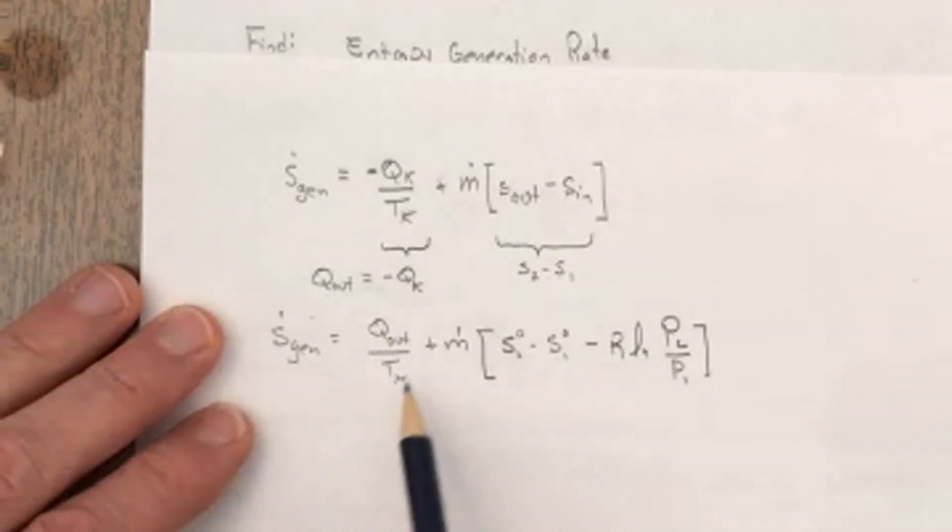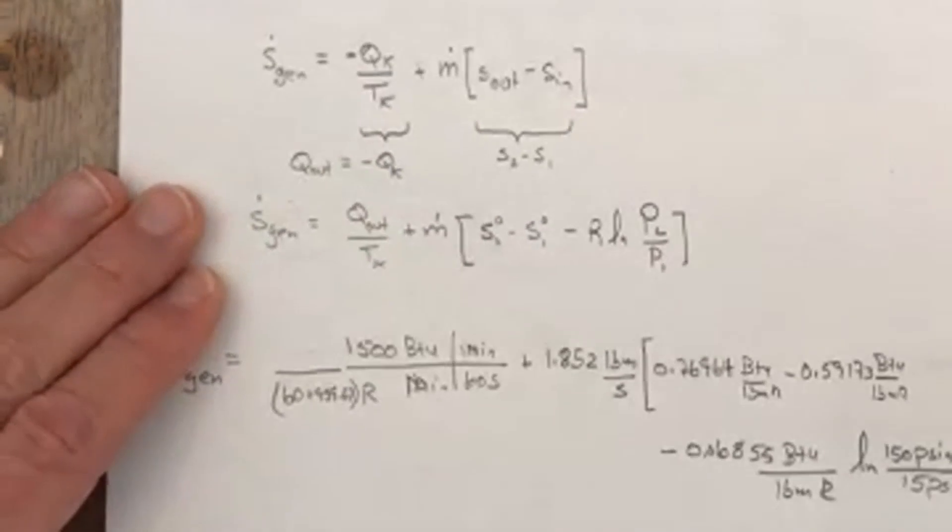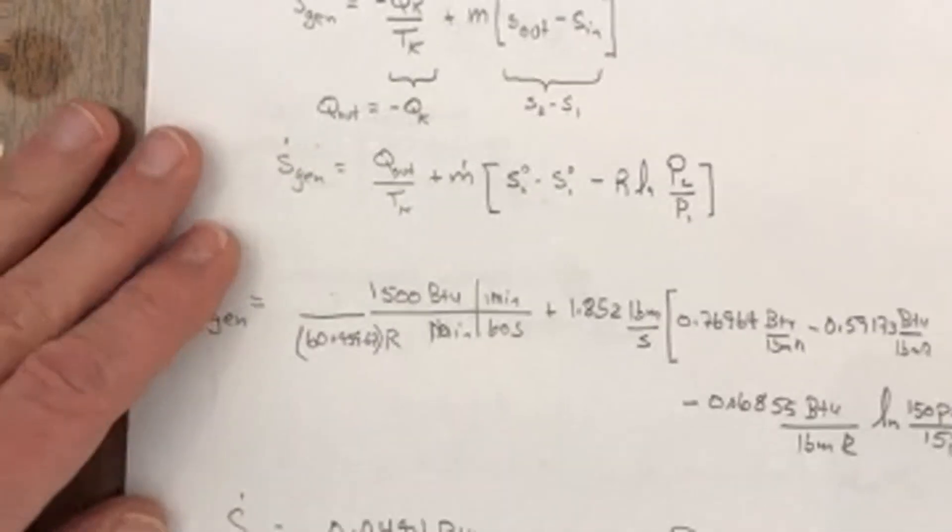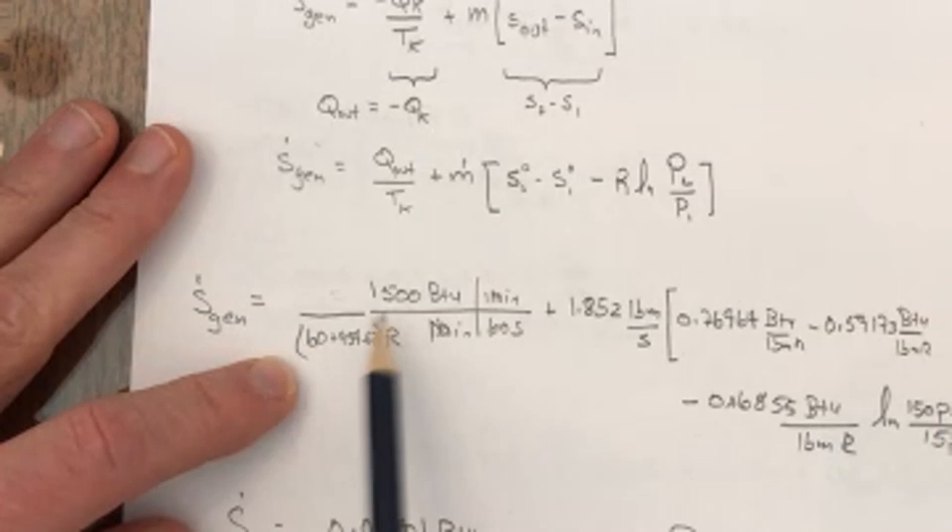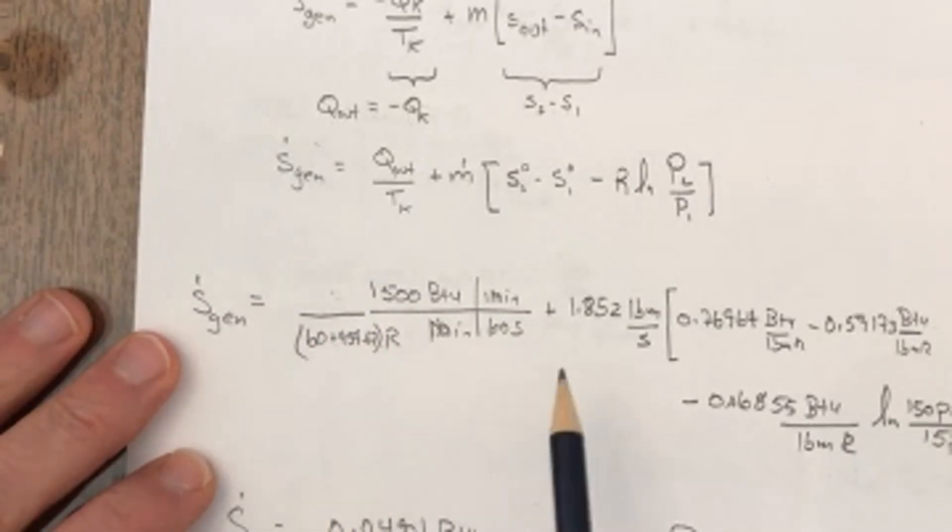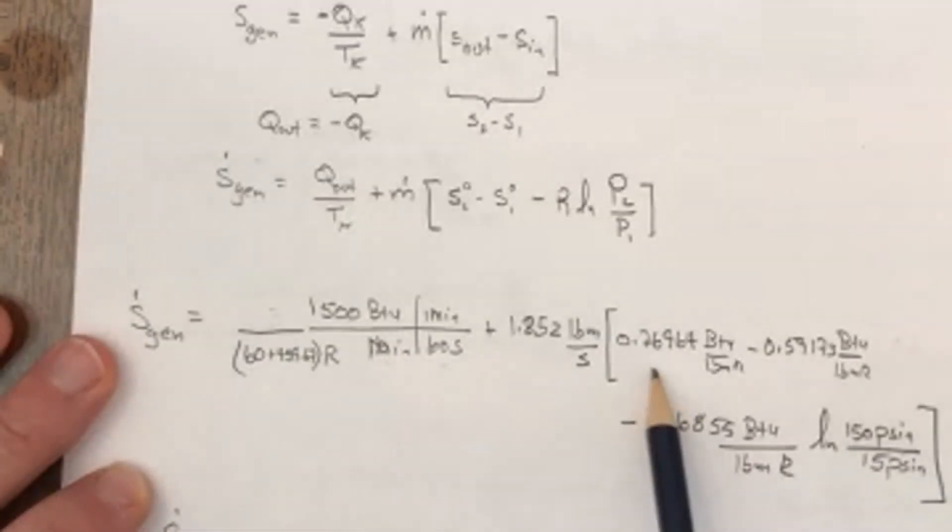And this temperature TK here is the 60 degrees Fahrenheit we were told was the environment temperature. So the rest of it is just kind of plug and chug. You end up with having to make sure you keep your units right, but you got this 1500 divided by 60 Fahrenheit, so you got to convert it to Rankine, and you got rid of the minutes to convert it to seconds.